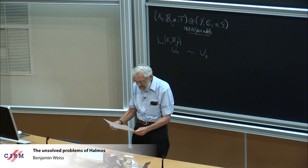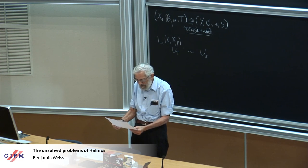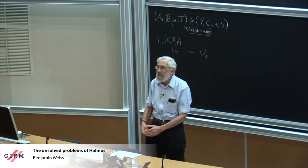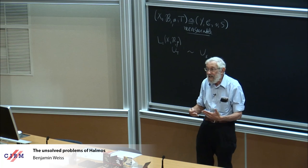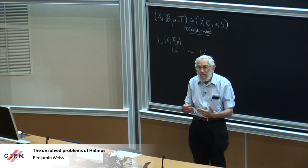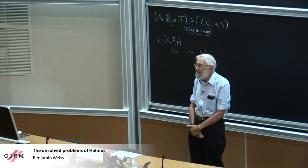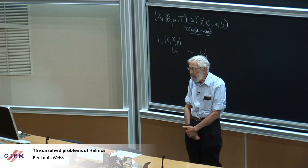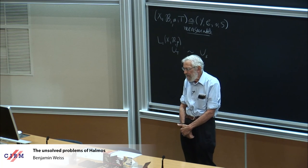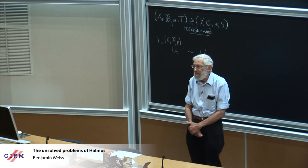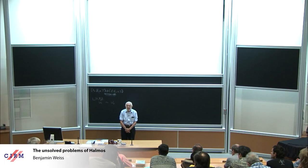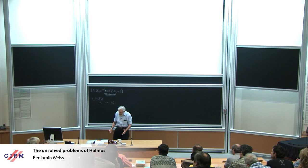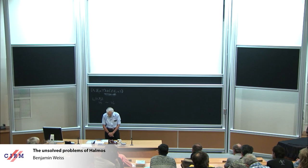And the third one is, do there exist two conjugate ergodic automorphisms of a compact group that do not belong to the same conjugacy class in the group of all automorphisms of the group? So here you could be speaking about automorphisms of the torus. There's an algebraic conjugacy, and the question is, can there be automorphisms of the torus which are measurably isomorphic but not algebraically conjugate? And with Roy Adler, who sadly passed away a few months ago, we answered this question in our work when we showed that entropy classifies the automorphisms of the torus. And we gave some examples of automorphisms which were not algebraically conjugate but had the same entropy.